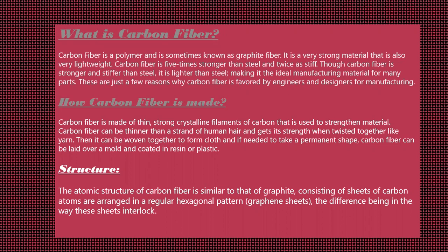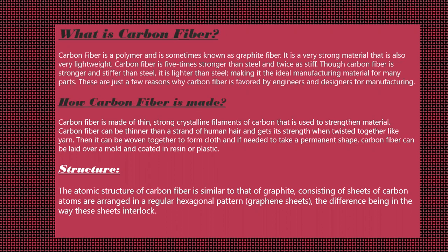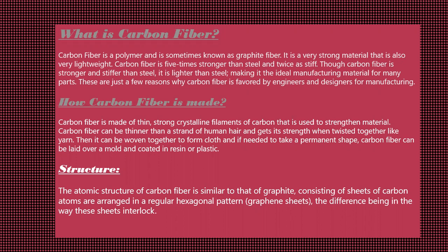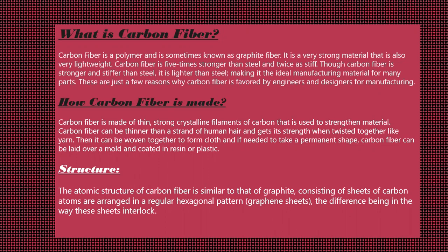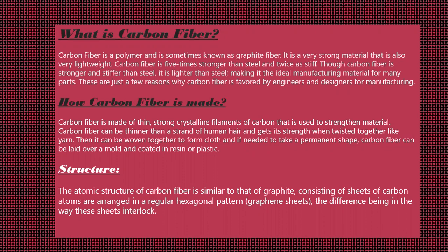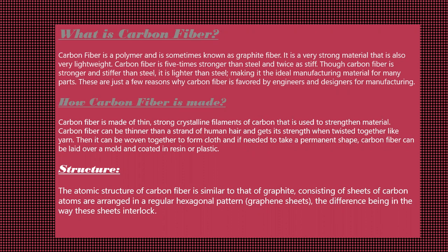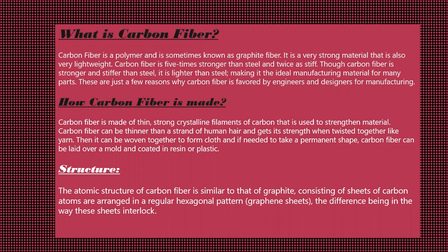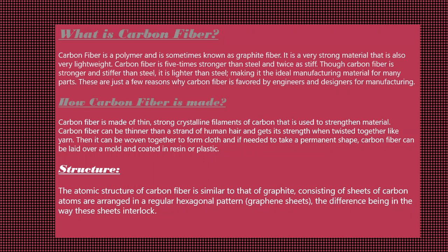Next: how carbon fiber is made. Carbon fiber is made from organic polymers, which consist of long streams of molecules held together by carbon atoms. Most carbon fibers — about 90 percent — are made from the PAN or the petroleum pitch process. Carbon fiber is made of thin, strong filaments of carbon used to strengthen material. It can be thinner than a strand of human hair and gets its strength when twisted together like yarn, then woven into cloth, laid over a mold, and coated in resin or plastic.